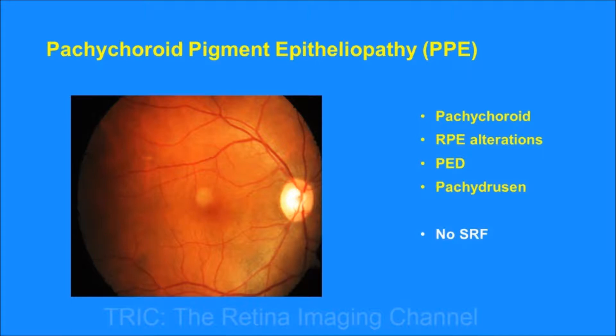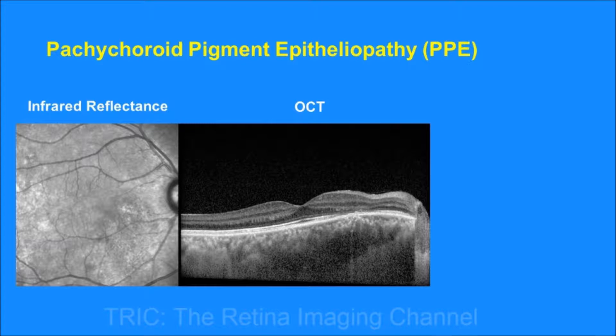This is how a pachychoroid pigment epitheliopathy fundus looks. We can see some RPE alterations near the inferior arcade. The OCT and infrared reflectance of this patient show thickened choroid with dilated Haller layer vessels. Looking more closely at the OCT and infrared reflectance images, we can see that near the disc or over the papillomacular bundle there is a loss of outer retinal layers and RPE.